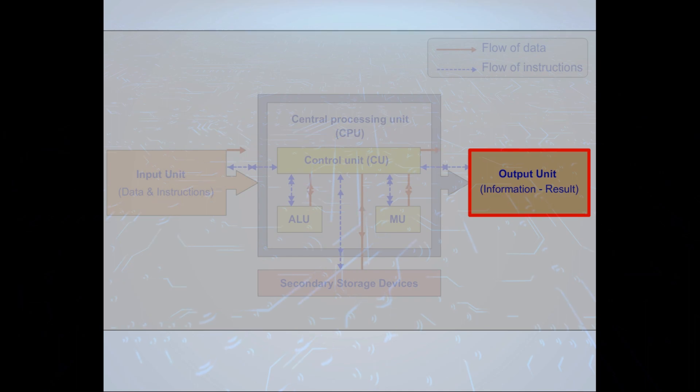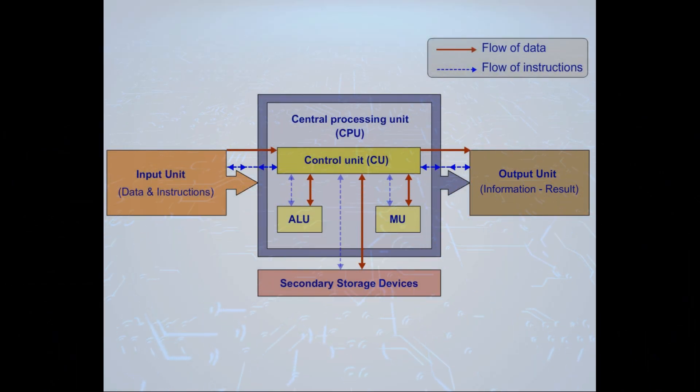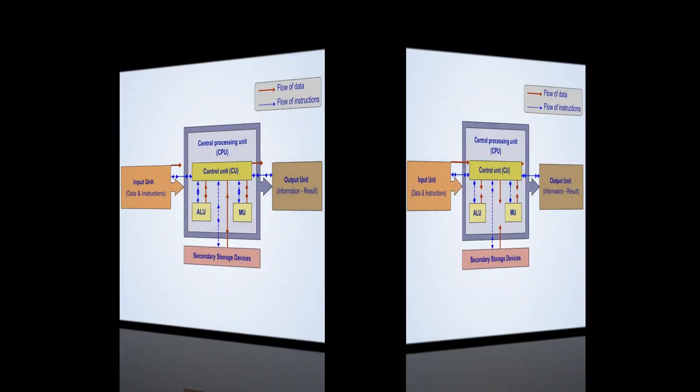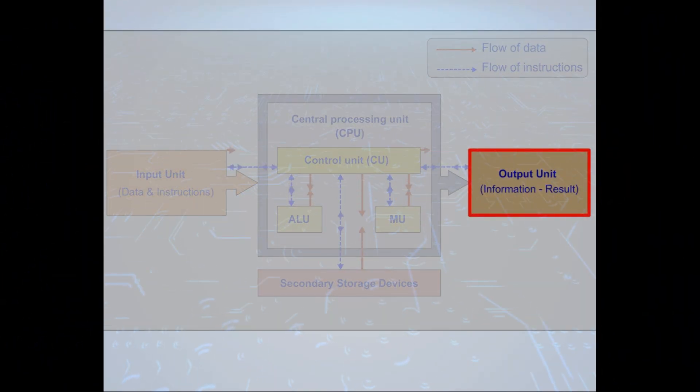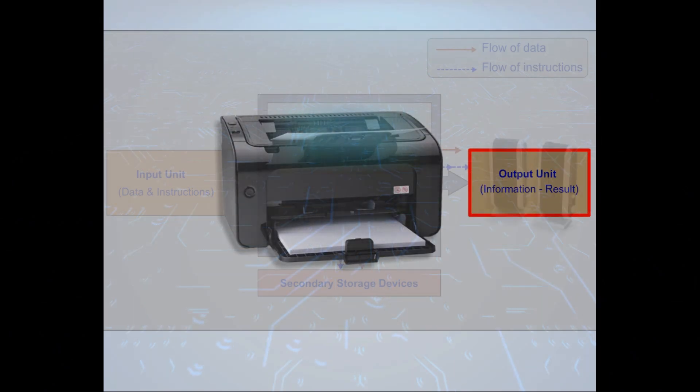The computer output unit is responsible for presenting information from the computer in a way that humans can understand, such as displaying it on a screen or printing it on paper. This is the information or result. Some common output devices are monitor, printer, and speakers.